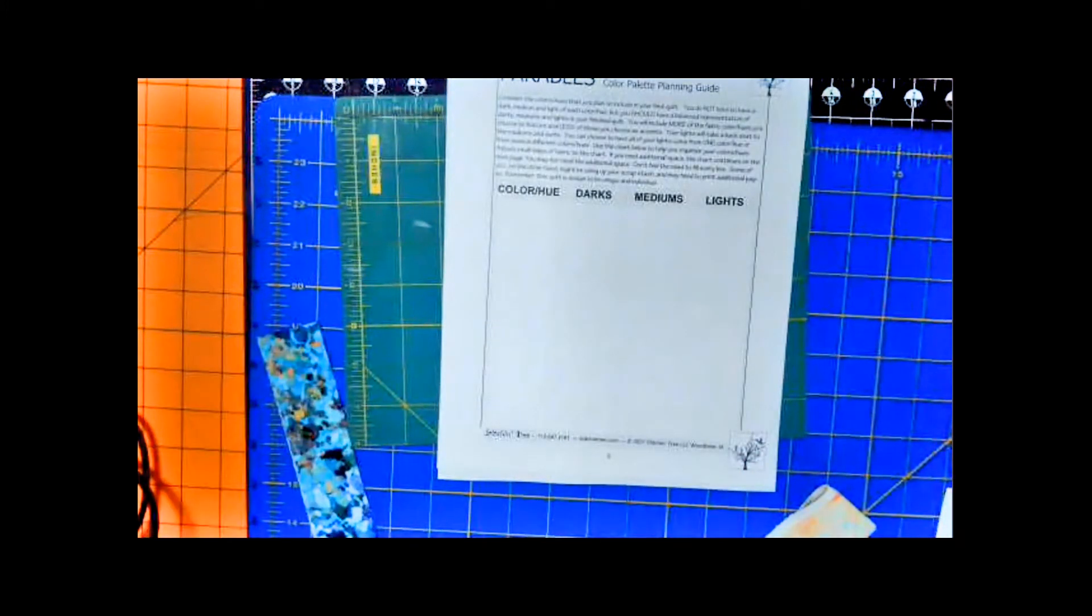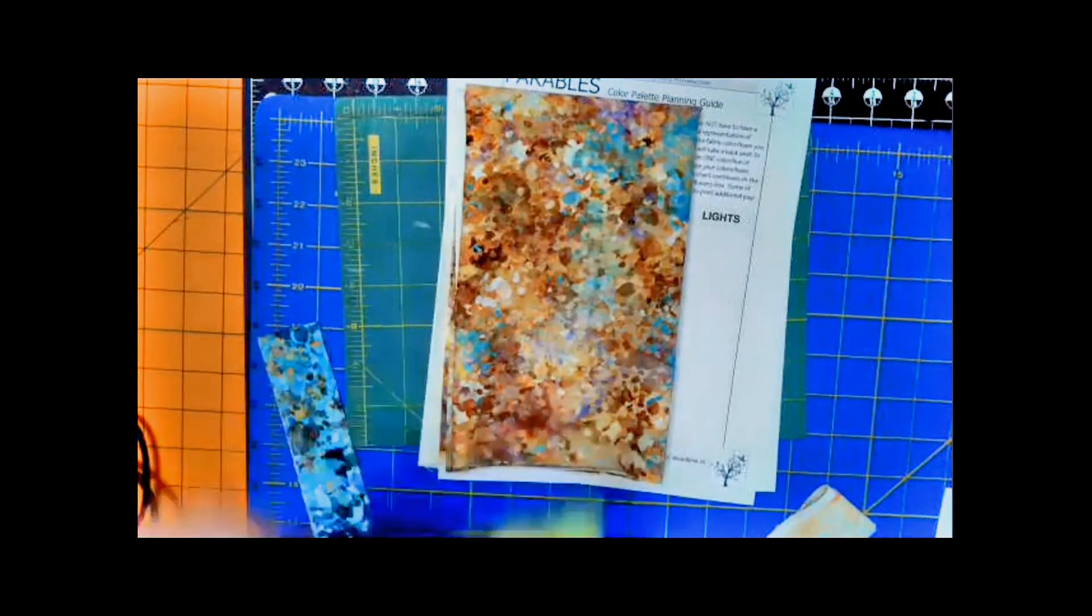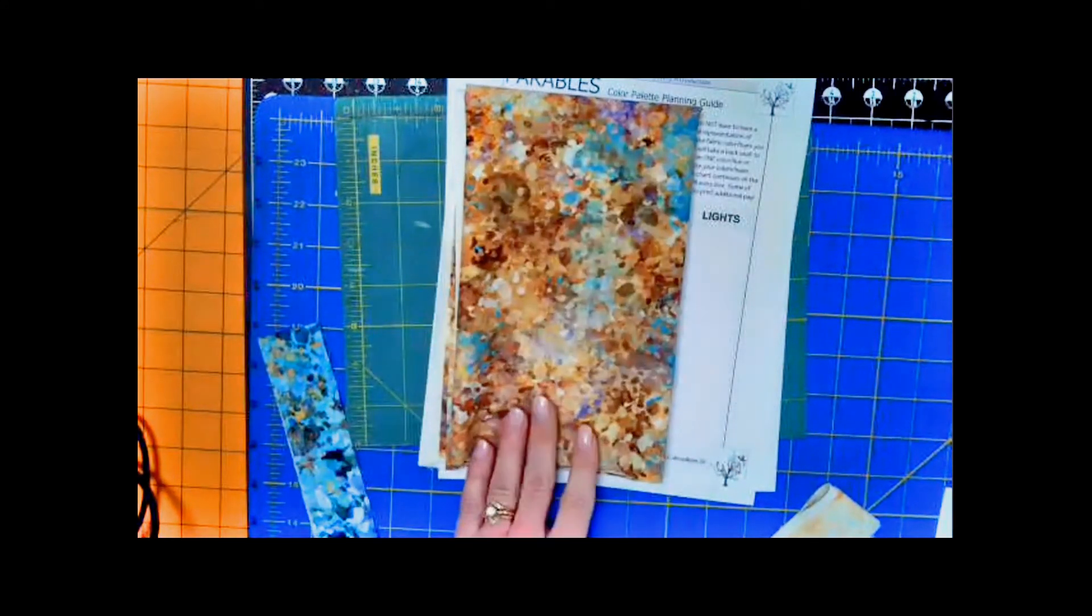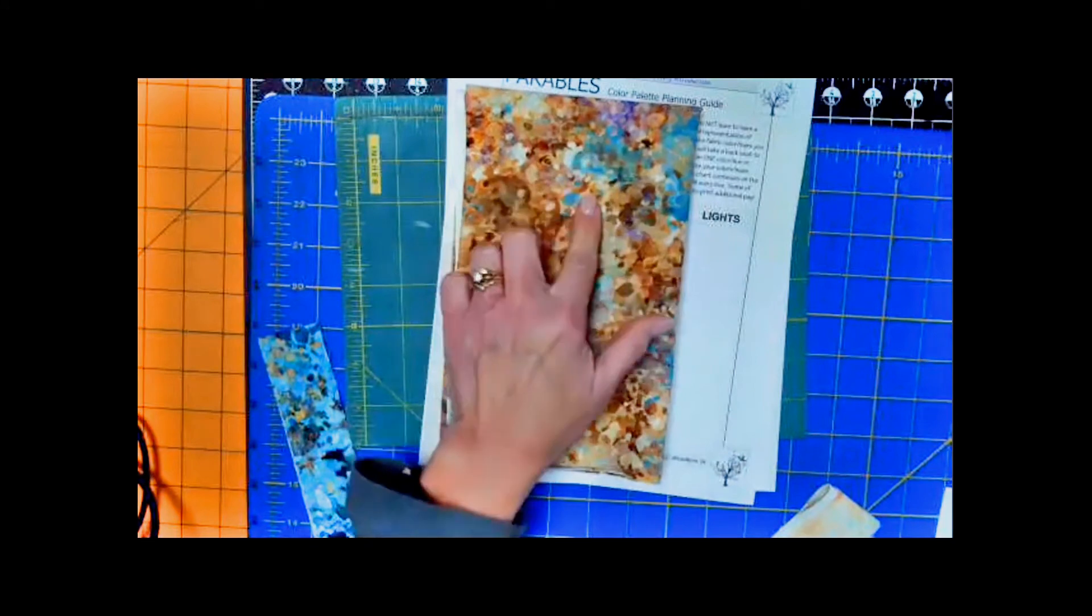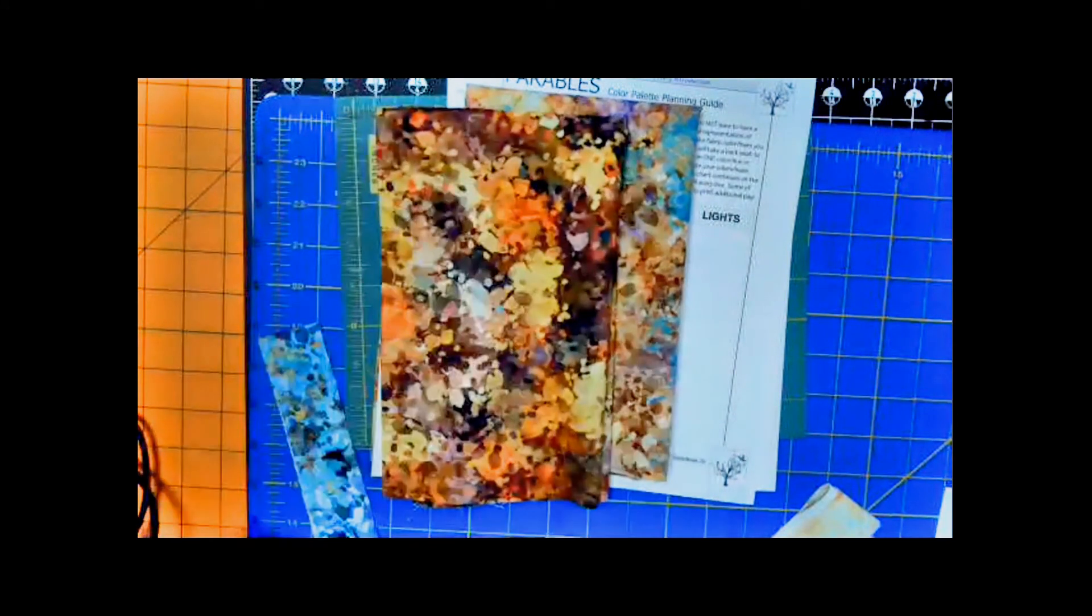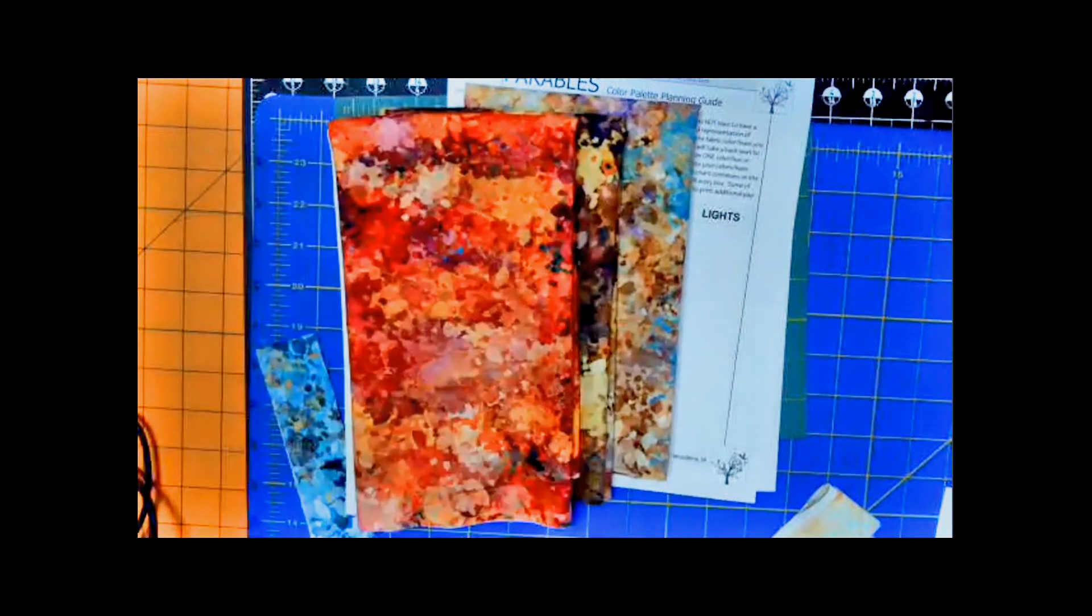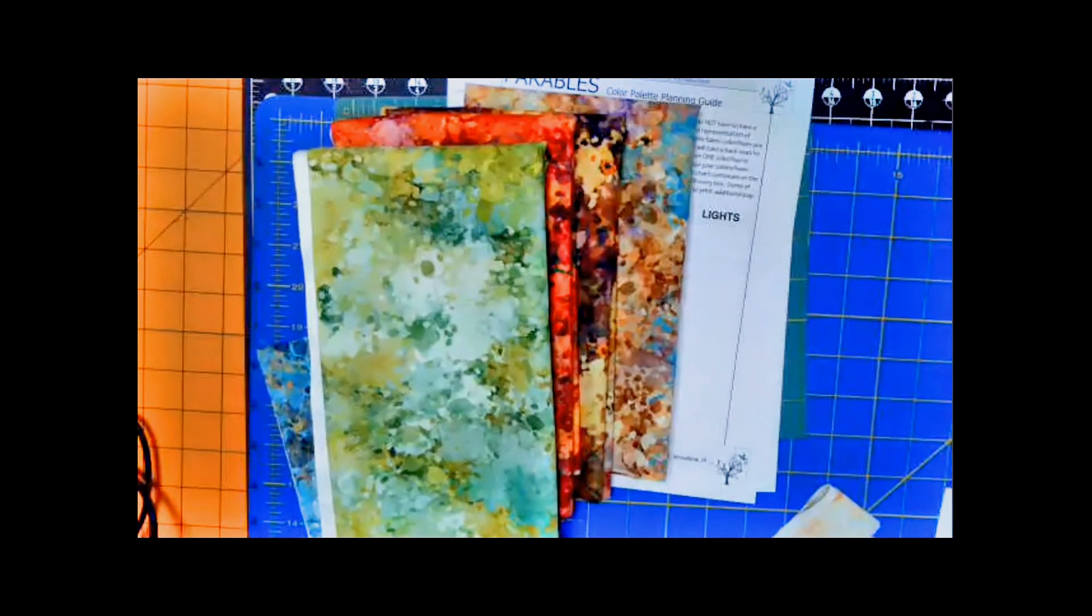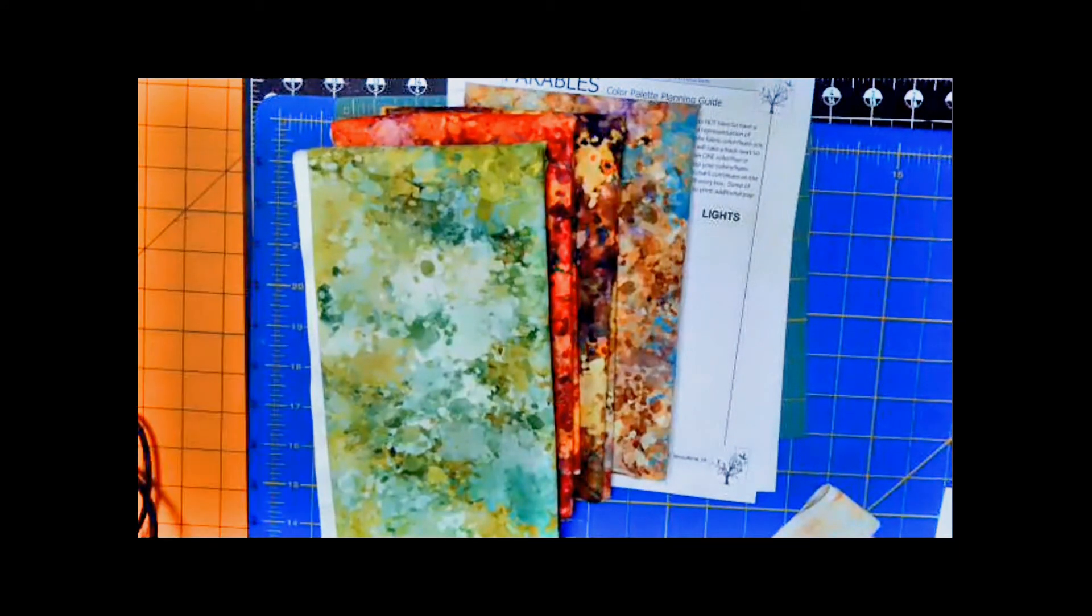This is your color palette planning guide. This line from Quilting Treasures is called Origins and it's by Dan Morris. And I absolutely loved the way the color palettes kind of work together. You see these turquoises and there's some purples and there's some reds. And it was just absolutely gorgeous. And I ordered several pieces from the line. Look at that beautiful green.